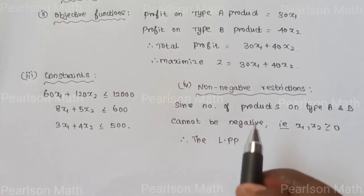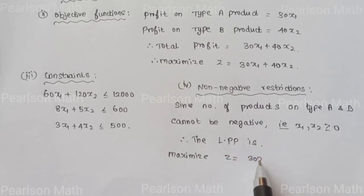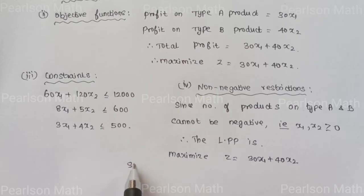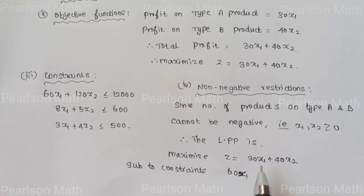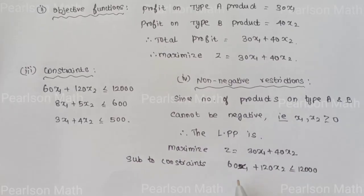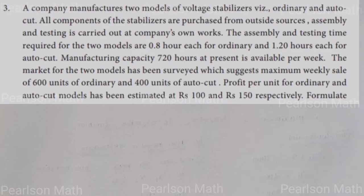Therefore, the linear programming problem is: Maximize Z equal to 30X1 plus 40X2, subject to constraints: 60X1 plus 120X2 less than or equal to 12,000; 8X1 plus 5X2 less than or equal to 600; 3X1 plus 4X2 less than or equal to 500; X1, X2 greater than or equal to 0.